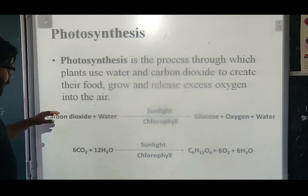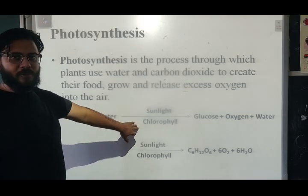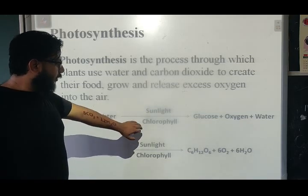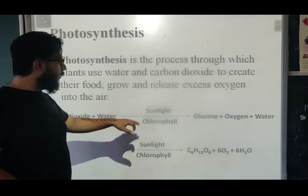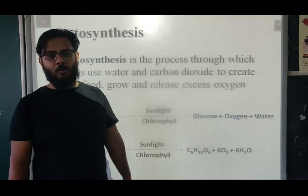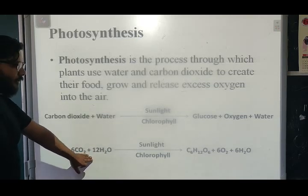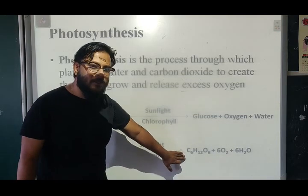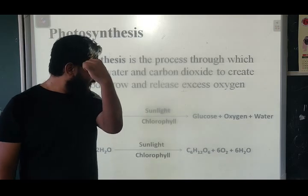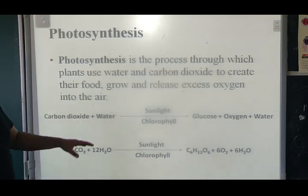Let's look at the chemical reaction during photosynthesis. Carbon dioxide and water come together in the presence of sunlight and chlorophyll. Chlorophyll is a substance in plants that gives them their green color and absorbs sunlight. Six parts of CO2 combine with 12 parts of hydrogen, and in the presence of sunlight and chlorophyll, produce glucose (C6H12O6), six parts of oxygen, and six parts of water.